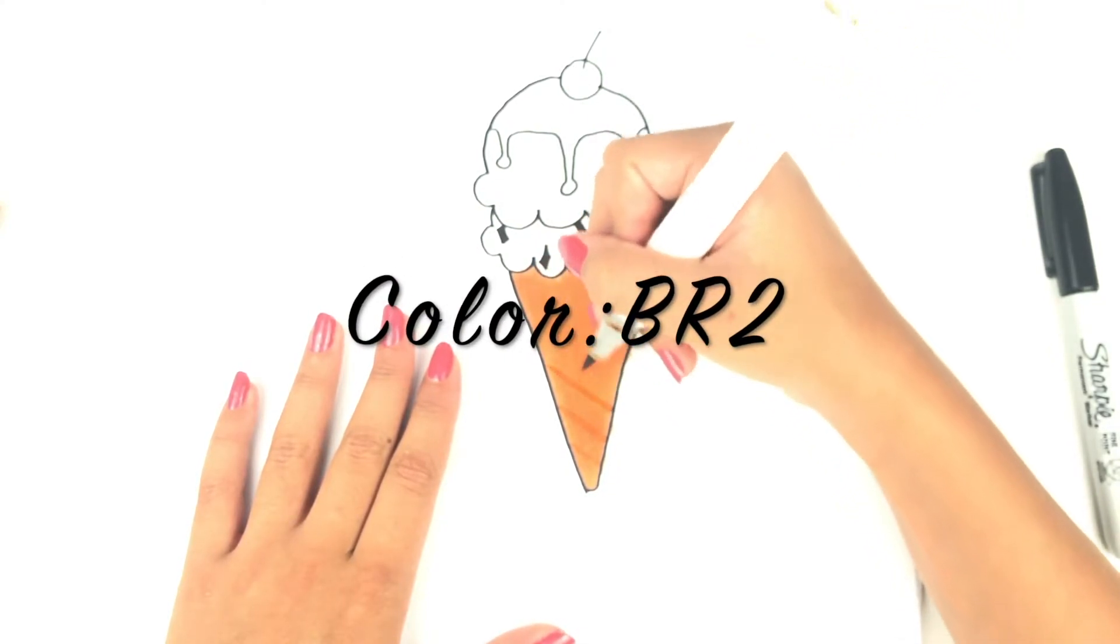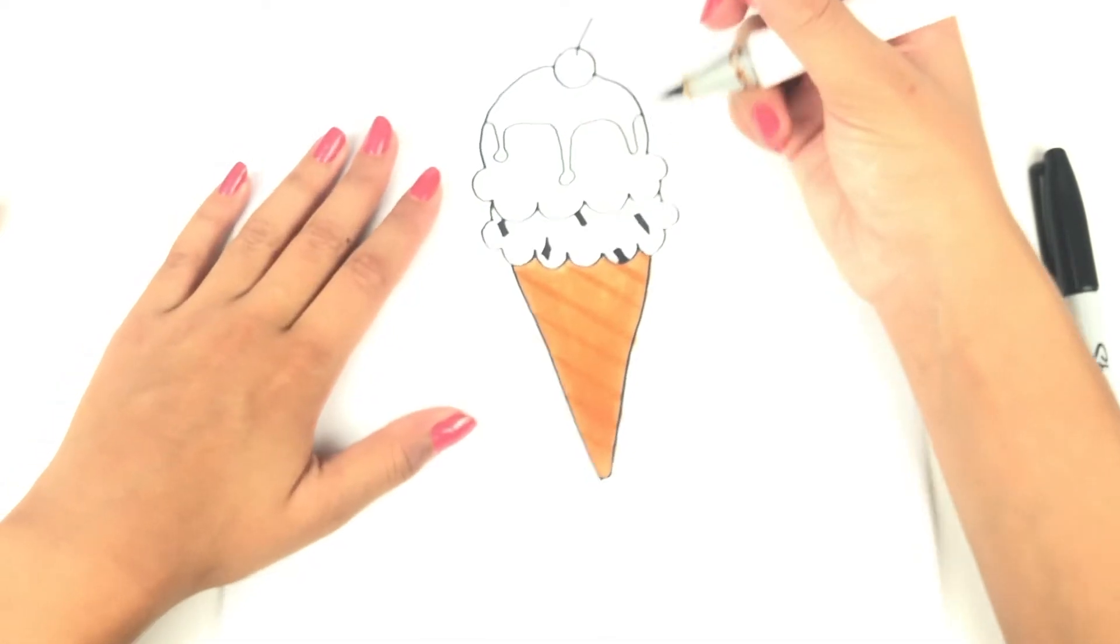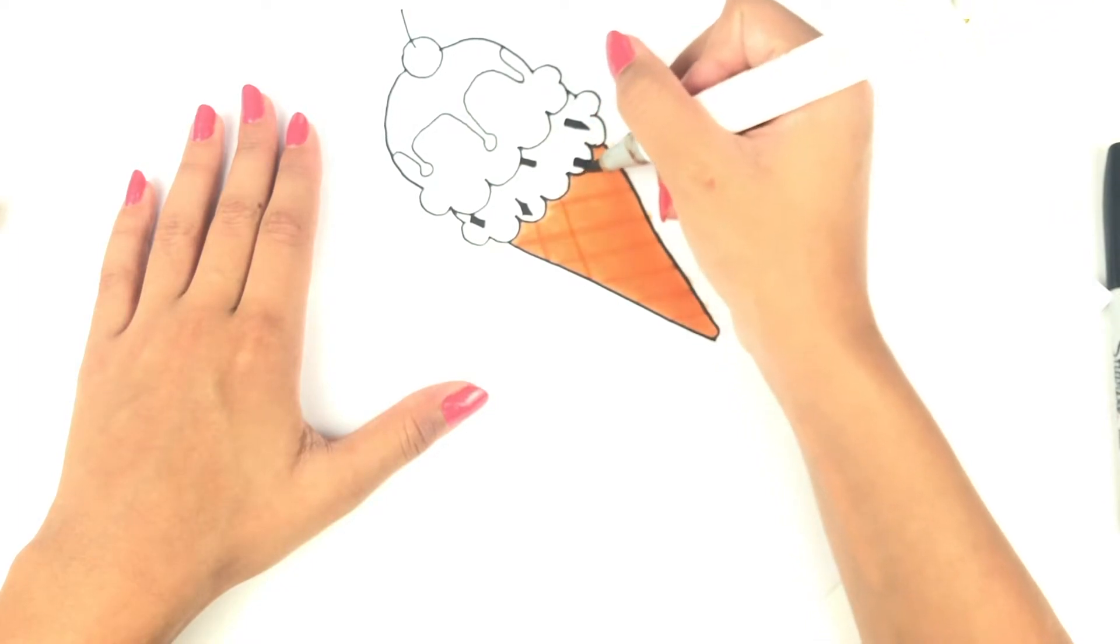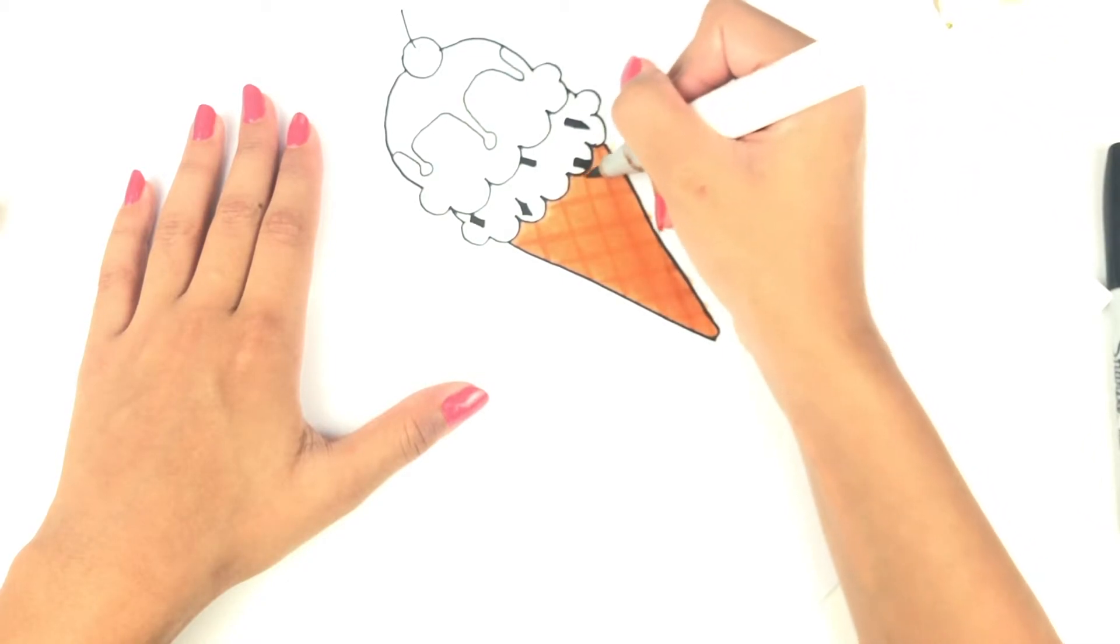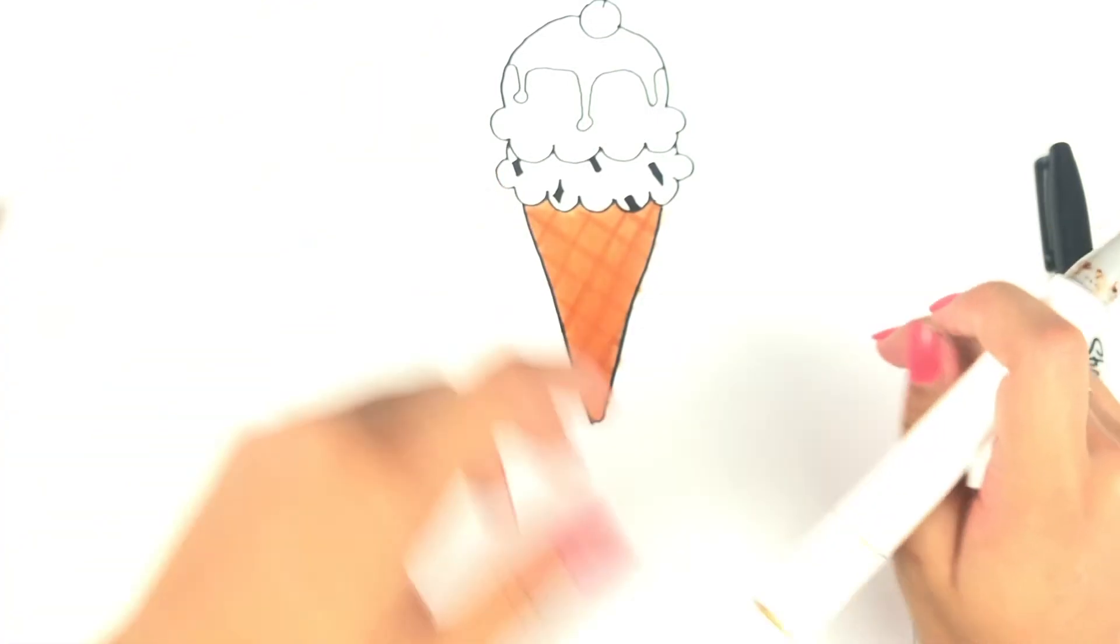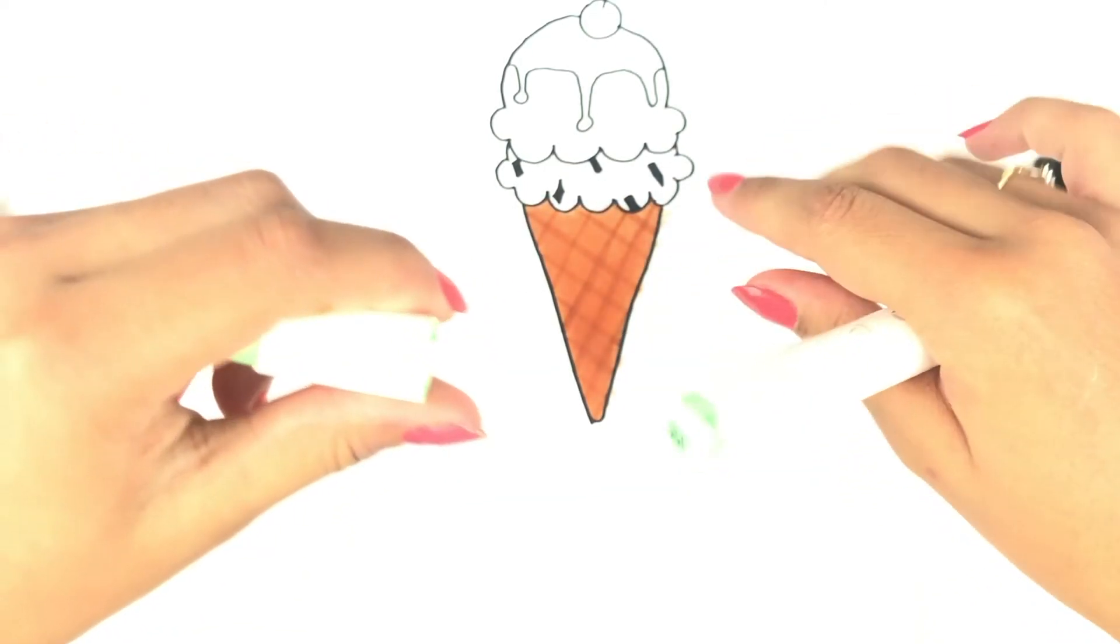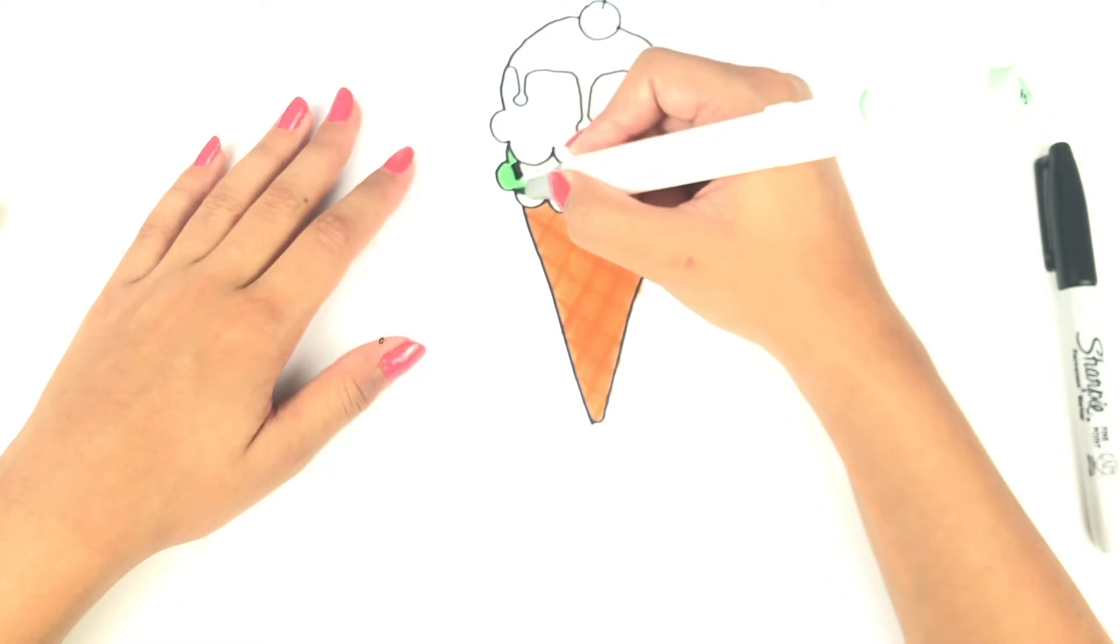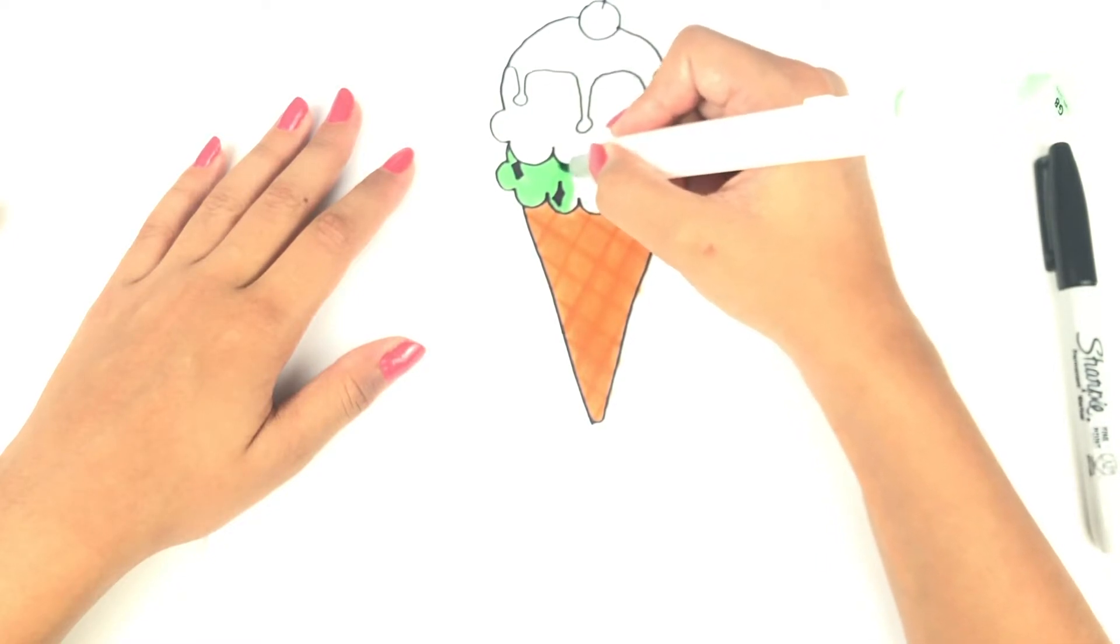I'm choosing mint chocolate chip for the bottom scoop since it is one of my favorite flavors. And for the second scoop, I decided to go with strawberry.